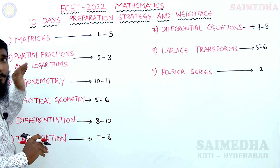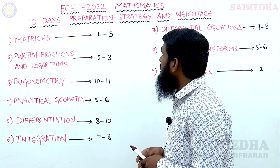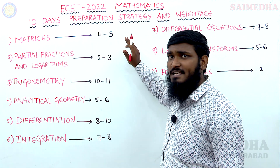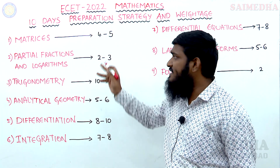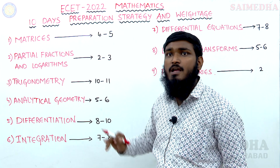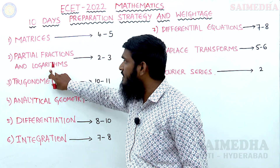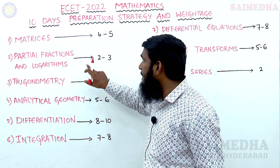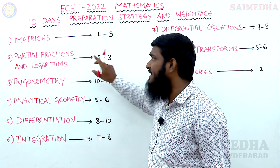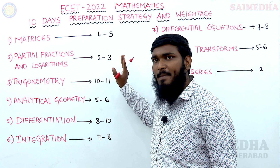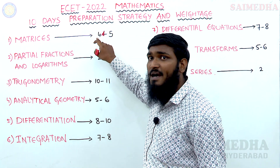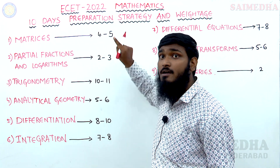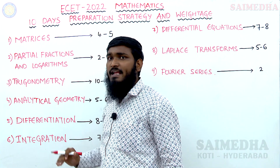Starting with the topic weightage: the first topic is Matrices. In Matrices, you can easily score 4 to 5 marks — minimum 4 marks and maximum 5 marks from this single topic. The second topic is Partial Fractions and Logarithms. Partial Fractions is one topic and Logarithms is one topic, and from these two topics combined you will get a minimum of 2 marks and a maximum of 3 marks.